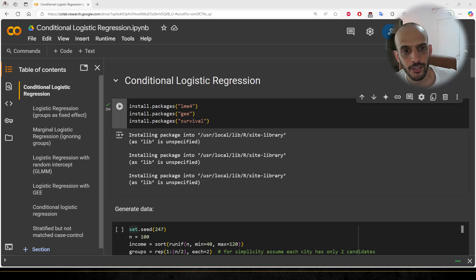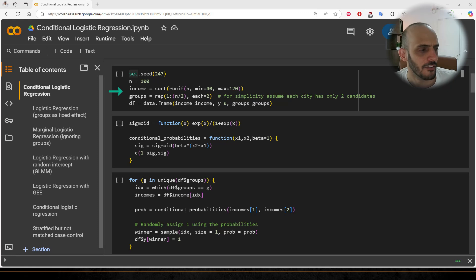I'm running this code in Google Colab with R. You'll need to install the following packages to run GLMMs, GEE, and conditional logistic regression. Here I'm creating the dataset. We'll have 100 observations divided into 50 groups with a one-to-one matching. I initialize the y values to be zeros.